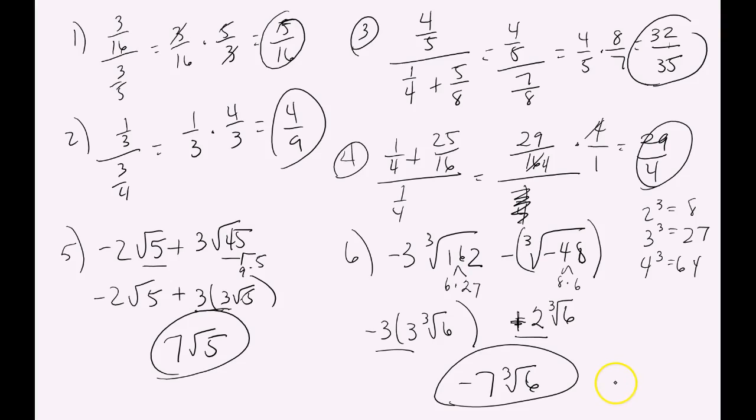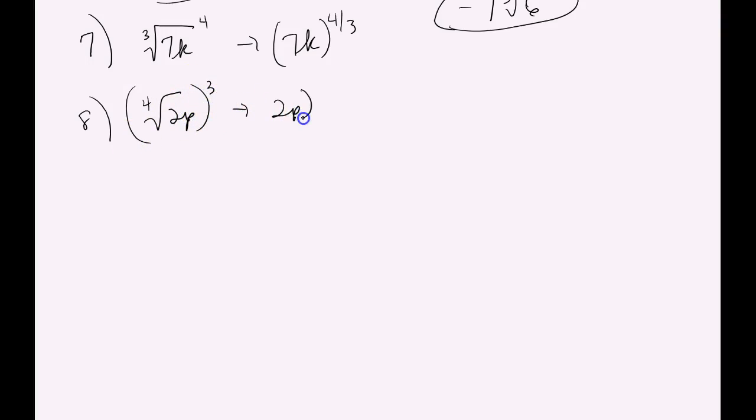All right. We are going to move on to the next step, which is writing radicals in exponential form. So we've got the cubed root of 7k all to the fourth. And this pretty much is exactly like our notes guide. You're just going to have to roll through these and make sure you understand how to rewrite.